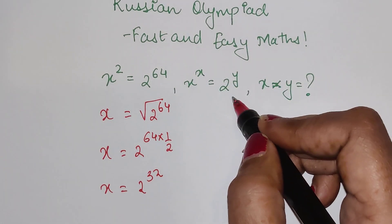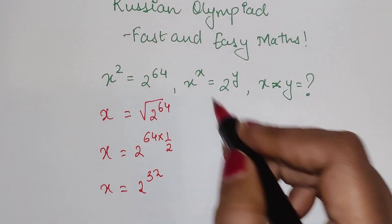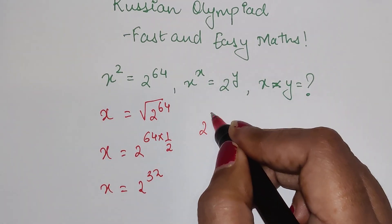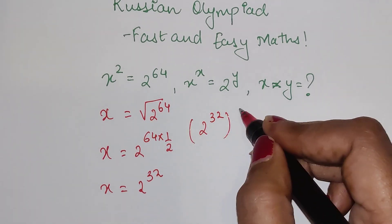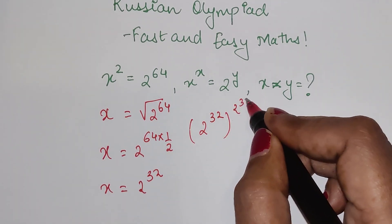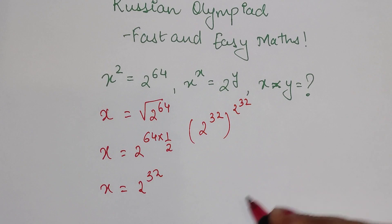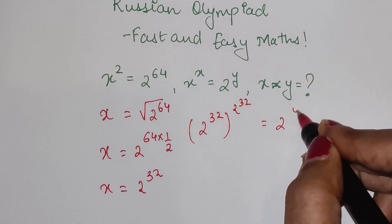Now for this one, I can write x^x as (2^32)^(2^32), and this is still equal to 2^y.